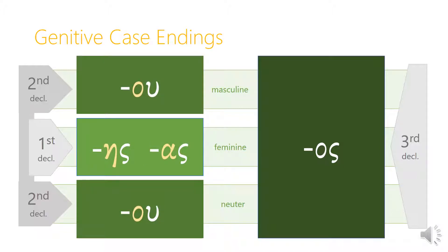Let's see those endings with the connecting vowels on them: we see the oo in masculine and neuter second declension, ace or os in first declension feminine, and since there's no connecting vowel for third declension nouns, just os.